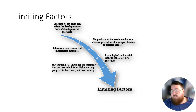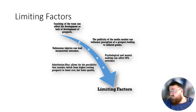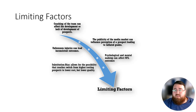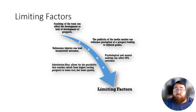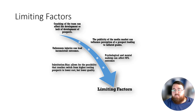Unforeseen injuries can lead to inconsistent outcomes — you'll have players that play really well and then get a season-ending injury and retire. The publicity of the media market can also influence perception of a prospect, leading to inflated grades. Outlets like mainstream media or PFF might have a prospect they like a lot based on college data, and when they go to the NFL, they keep posting things favorable to that prospect when in reality they didn't do much. The media can definitely inflate perception, which can lead to inconsistent results.